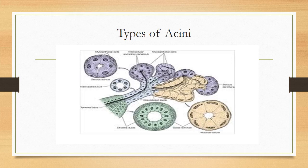In the mucus type of acini, the lumen is broad, the cells are broad and flat with flattened nuclei, and they stain basophilic with H&E stain. Myoepithelial cells surround this acinus and help contract the cells to pour their secretions into the lumen. In mixed type acini, both mucus and serous secretions are present — called serous demilunes, where mucus acini have a crescent-shaped cap of serous acini.